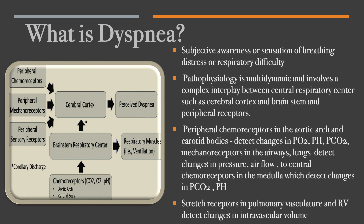The stretch receptors in the pulmonary vasculature and right ventricle detect changes in intravascular volume. In an emergent situation you're not really thinking about the pathophysiology, but it's good to know the general patho. You also have to think of the underlying mechanism, because it could be COPD, CHF, or PE — and it's more important to know the underlying mechanism versus the general pathophysiology.